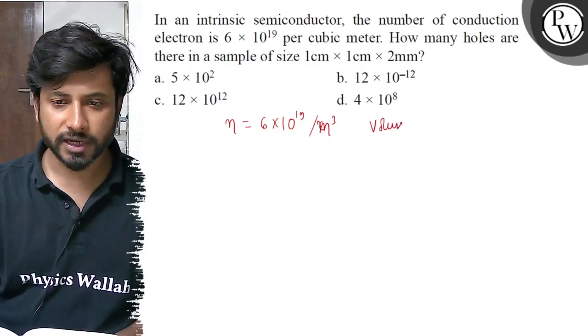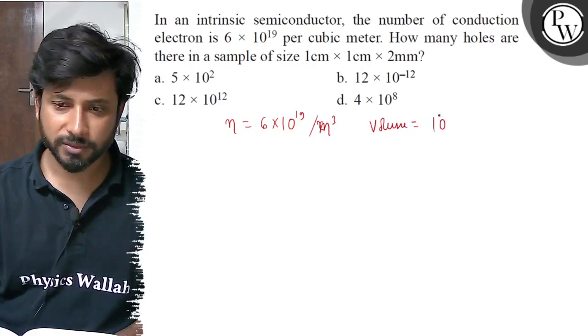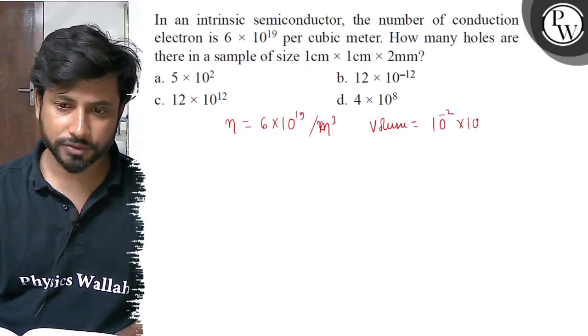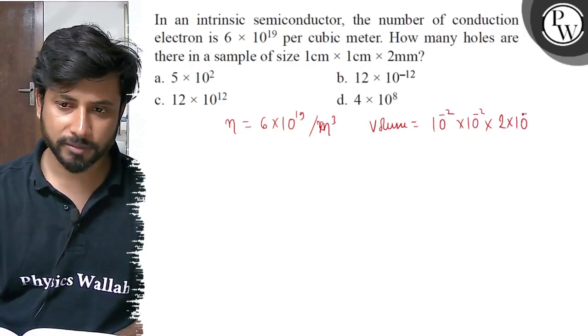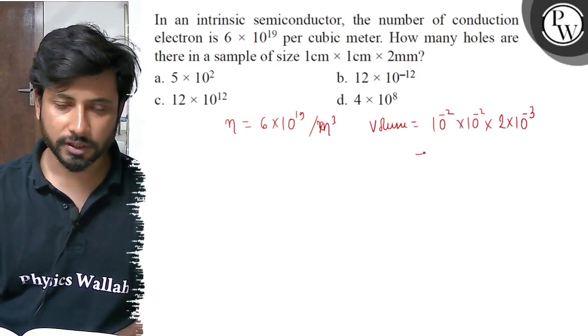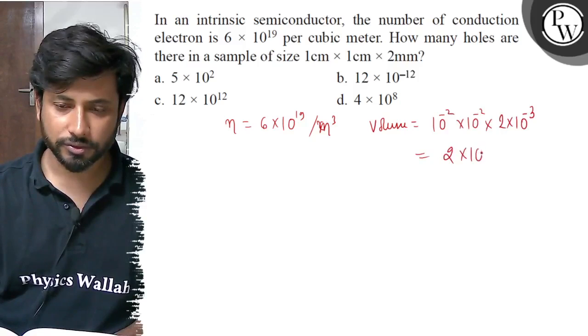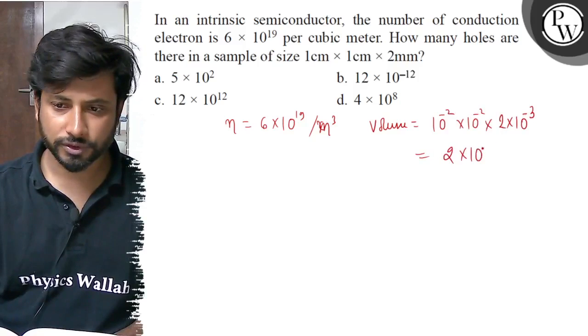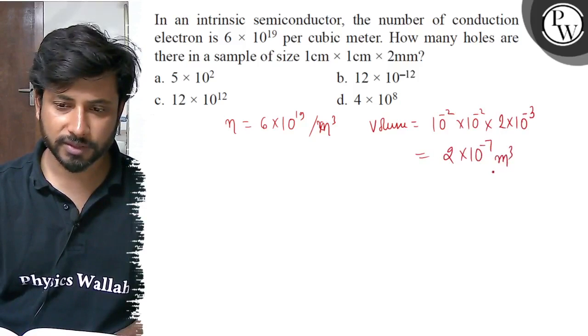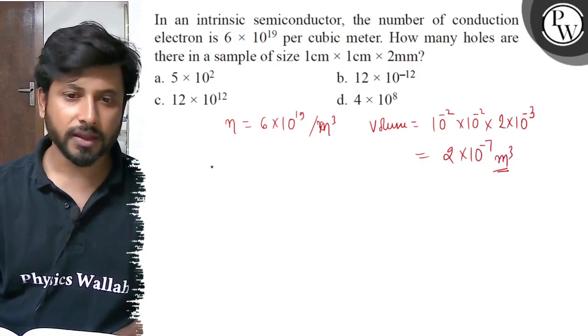And volume is 1 centimeter, 10 to the power minus 2 into 10 to the power minus 2 into 2 into 10 to the power minus 3. 2 into 10 to the power minus 4, minus 7. 2 into 10 to the power minus 7 meter cube.